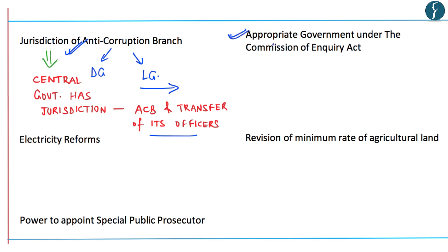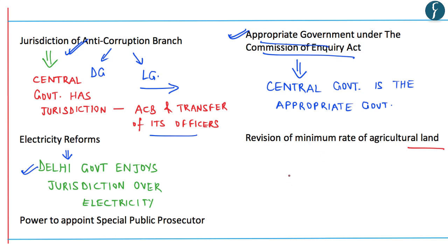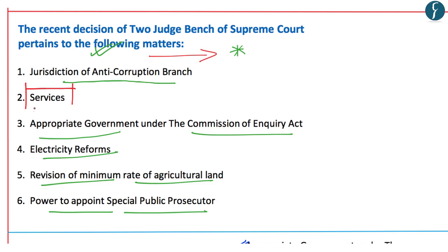On the Commission of Inquiry Act, the Supreme Court ruled in favor of the central government as the appropriate government with respect to Delhi. On electricity reforms, the Supreme Court held that the Delhi government enjoys jurisdiction over electricity and related matters. On revision of minimum rate of agricultural land, the Supreme Court ruled Delhi government has the power to revise minimum rates, with the LG able to refer differences to the president. On the power to appoint special public prosecutor, the Supreme Court ruled in favor of the Delhi government. However, the issue of services remained, with the two judges in conflict.